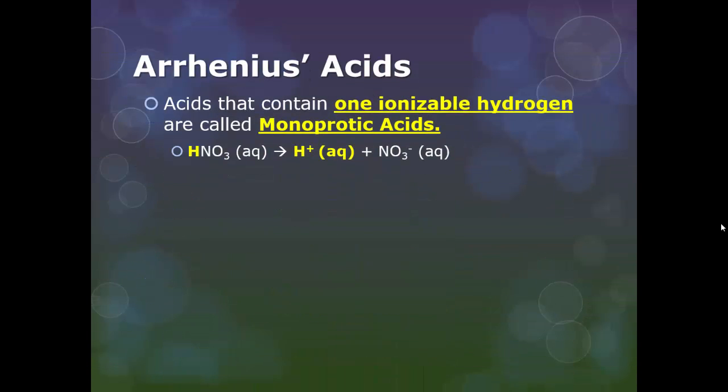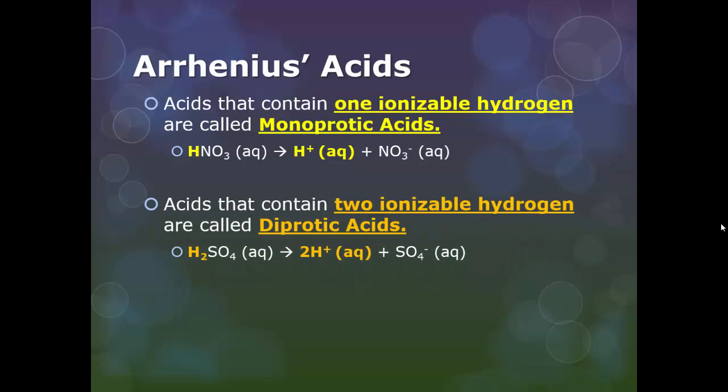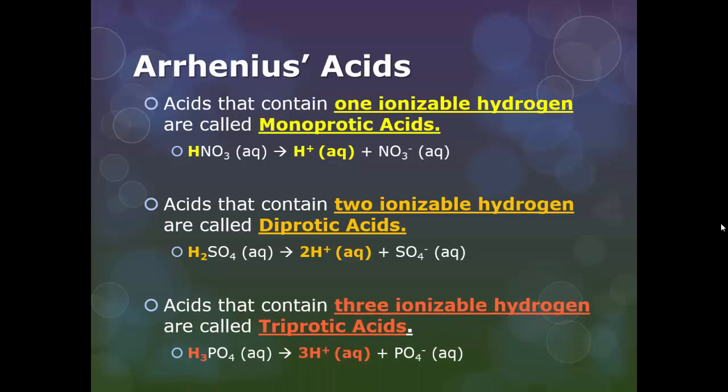Acids that contain one ionizable hydrogen are called monoprotic acids, like nitric acid. When it dissociates, you're going to get one hydrogen ion and one nitrate ion. Acids that can dissociate two ionizable hydrogens are called diprotic, like sulfuric acid. And then acids that contain three ionizable hydrogens are called triprotic, like phosphoric acid.